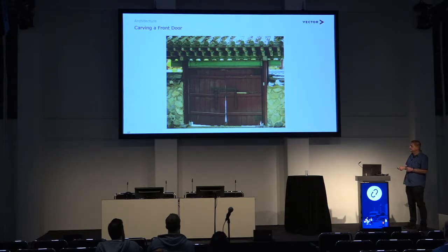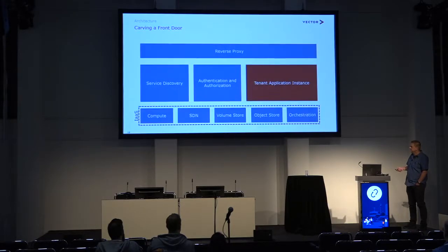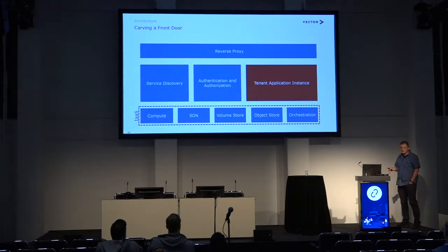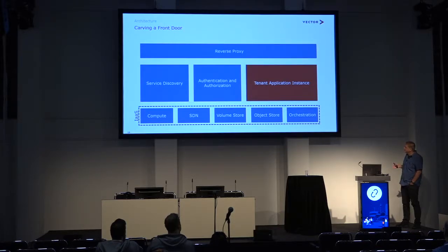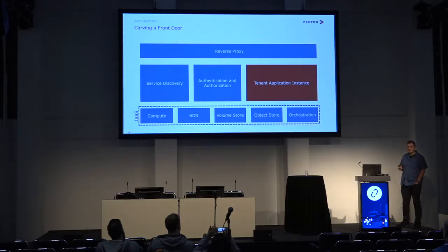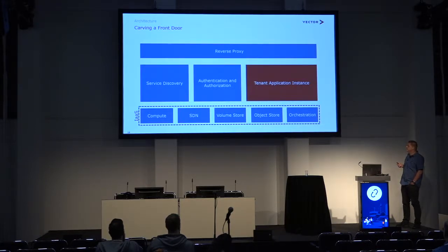Let's start with the way you get into the cloud and how requests are processed. A request will first end up at a reverse proxy that forwards it. The request is finally worked on by a tenant application instance. In our present model there is a dedicated instance for every application and for every tenant, which makes tenant separation easy from the application development point of view — you simply don't need to care for it.